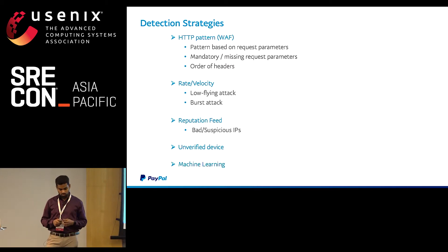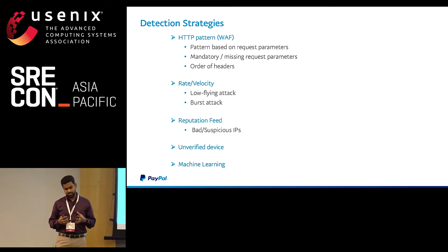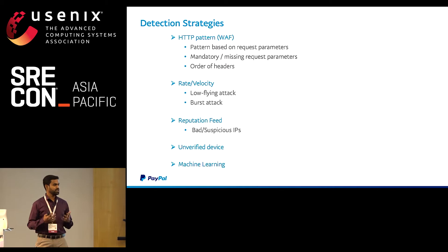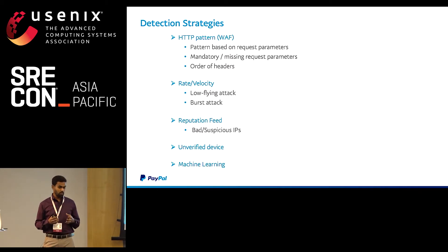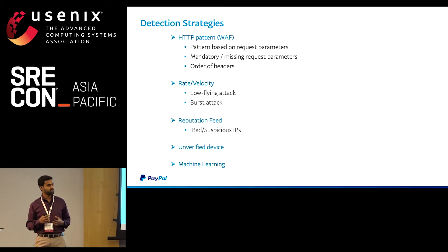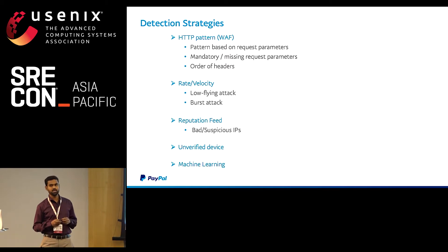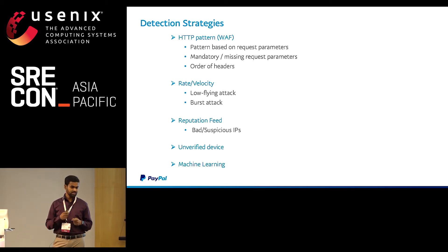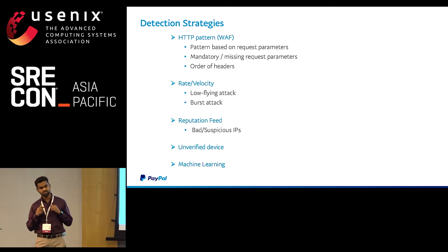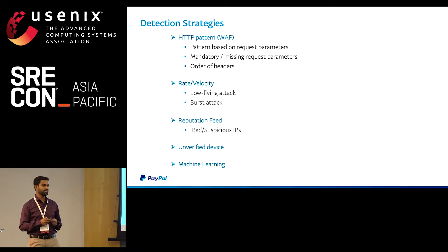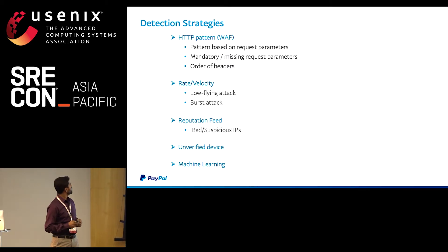The last strategy is machine learning. All the ideas I mentioned — patterns, rate-based policies, reputation, unverified device — cannot be maintained manually by humans. By the time a human sees an attack and reacts, the attack has already caused damage. All these policies and rules should become machine learning models. The system should self-learn, tweak the pattern-based policies, rate-based policies, and unverified device detection, and detect anomalies at layer 7 automatically. With that, I'll hand over to my colleague for the mitigation strategies.